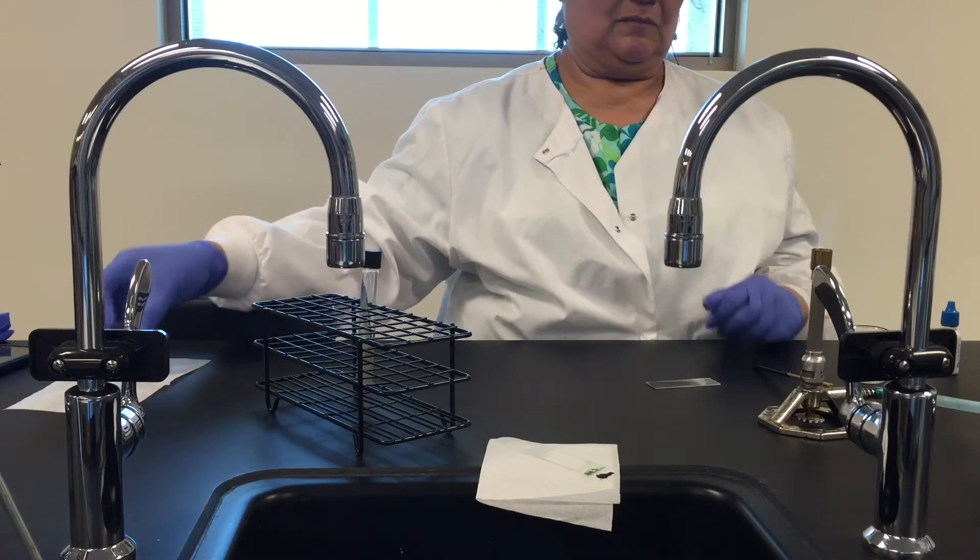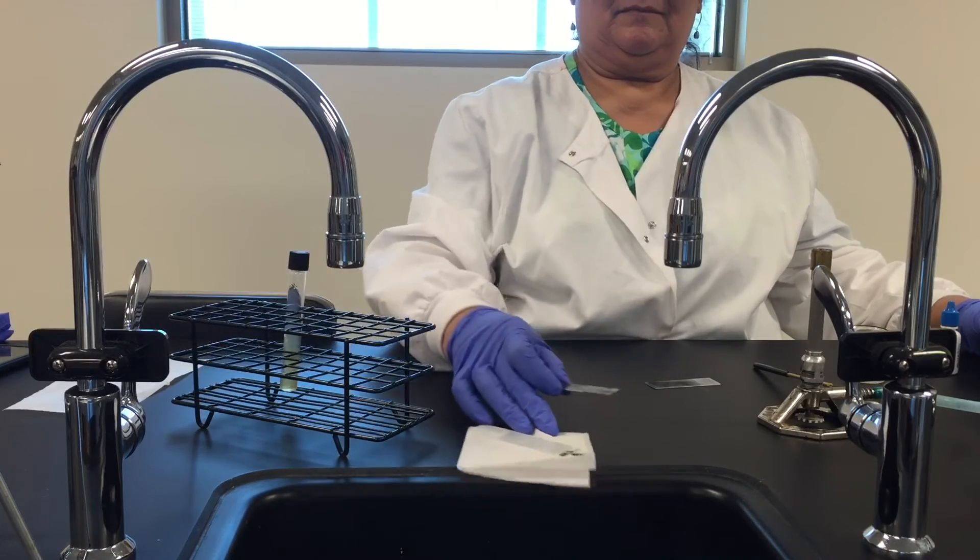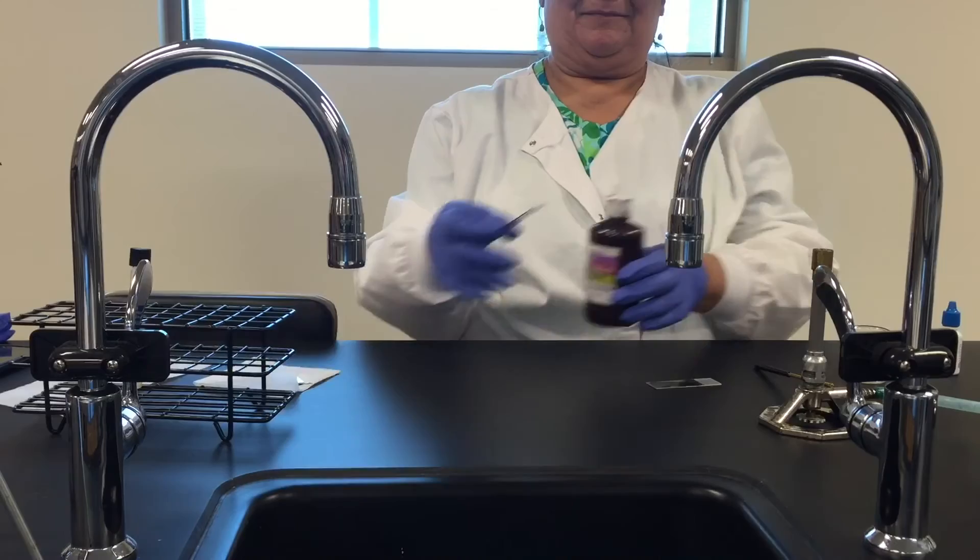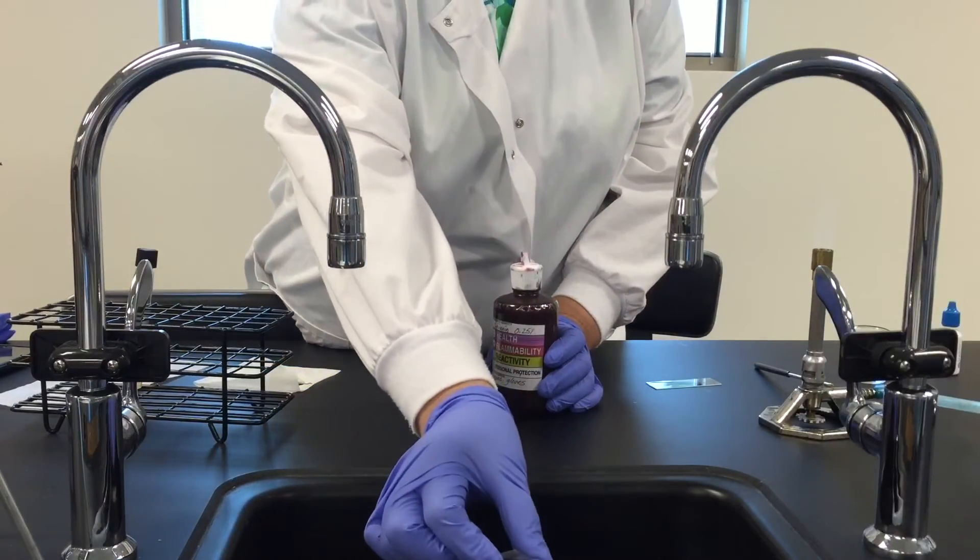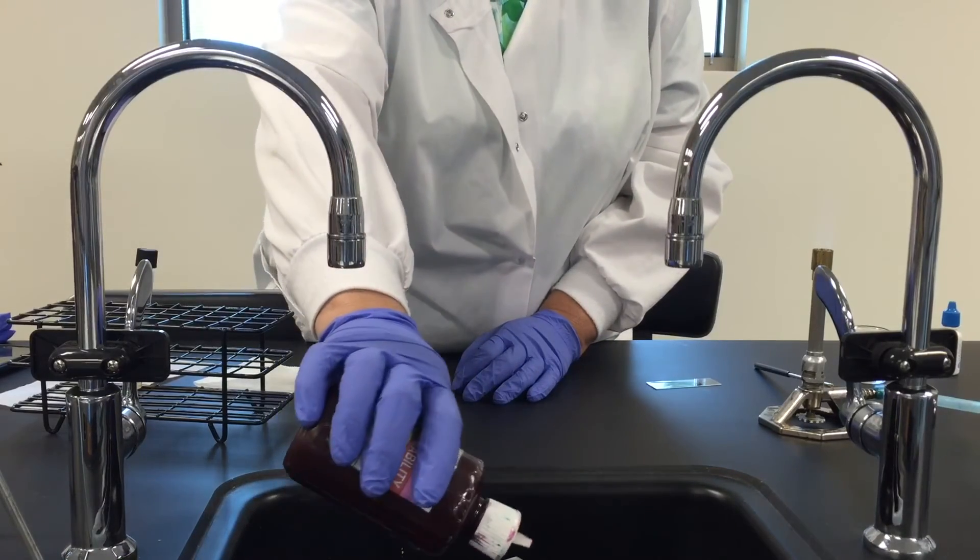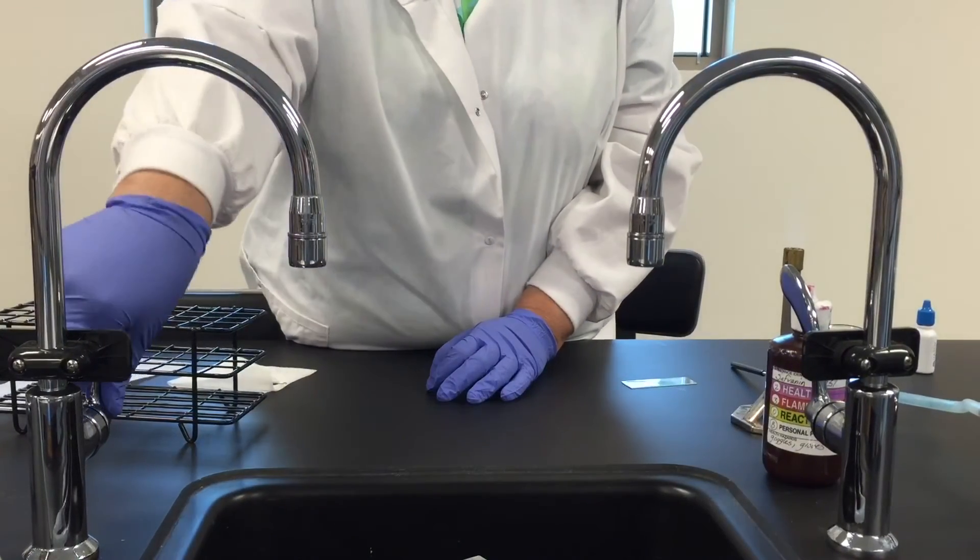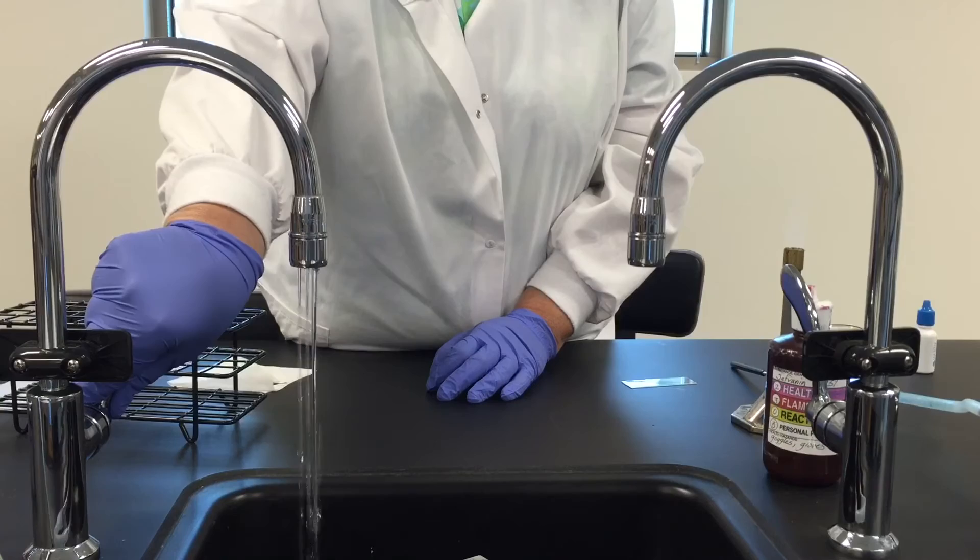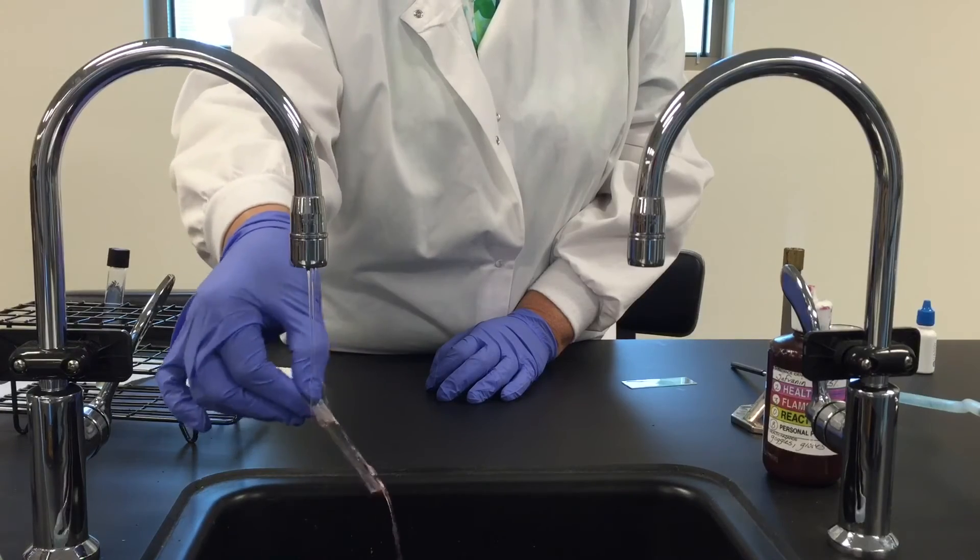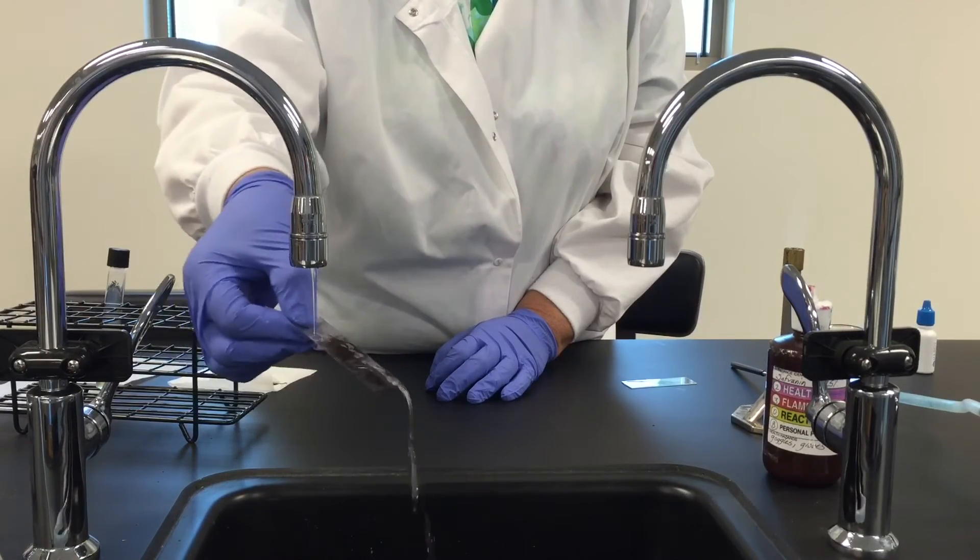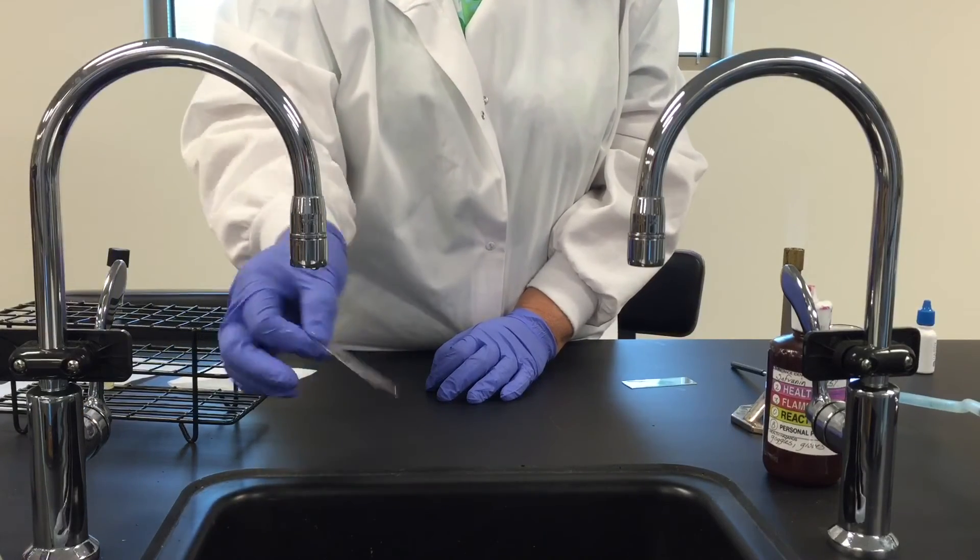Then we are going to take the slide and put it on a staining rack over the sink and we're going to cover it with safranin. We'll leave the safranin on for a minute. Then we'll pick the slides up one at a time, give them a quick rinse. You can use your clothes pin for that or just do it by hand like Renee is doing. Blot them dry with your bibulus paper and you're ready to view.